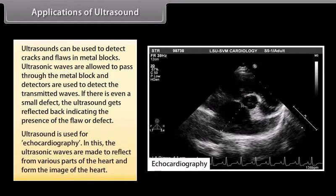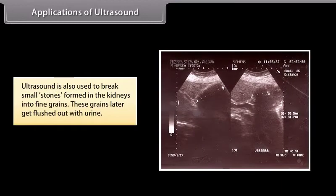Ultrasound is used for echocardiography. In this, the ultrasonic waves are made to reflect from various parts of the heart and form the image of the heart. Ultrasound is also used to break small stones formed in the kidneys into fine grains. These grains later get flushed out with urine.